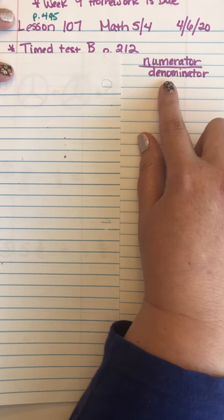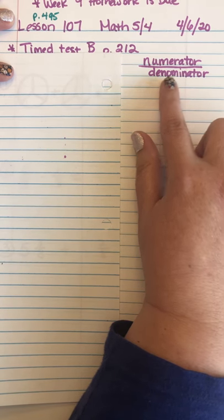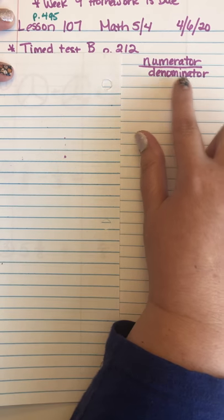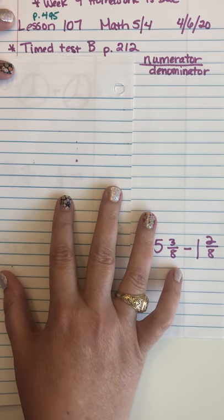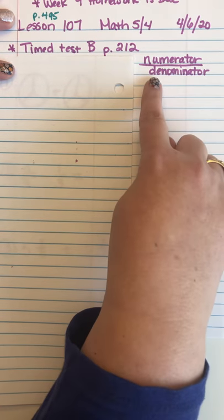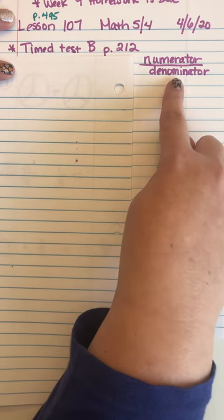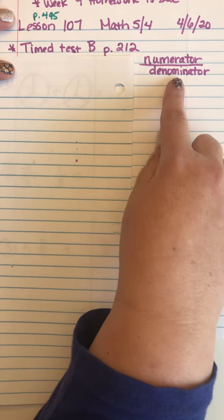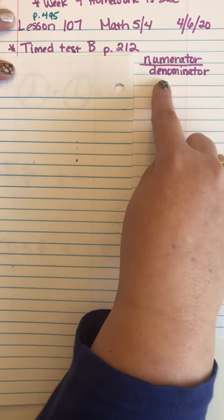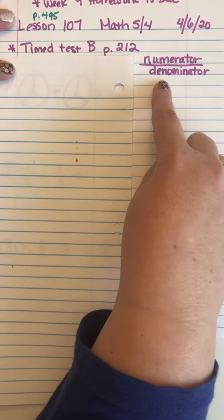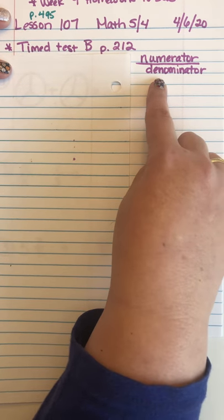Denominator — we remember because denominator starts with D for down. So we're going to be adding fractions that have a common denominator. The common denominator is a big term, but what it really means is that we're going to be adding fractions that have the same denominator.